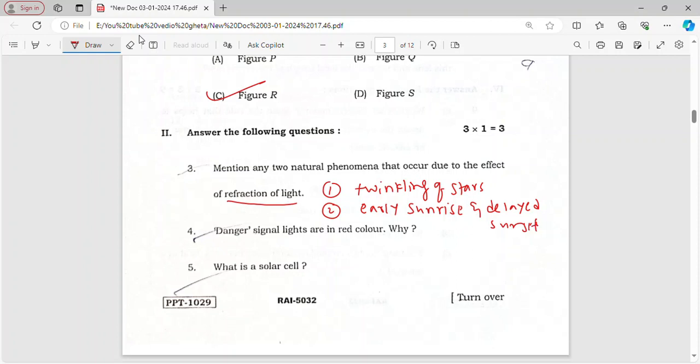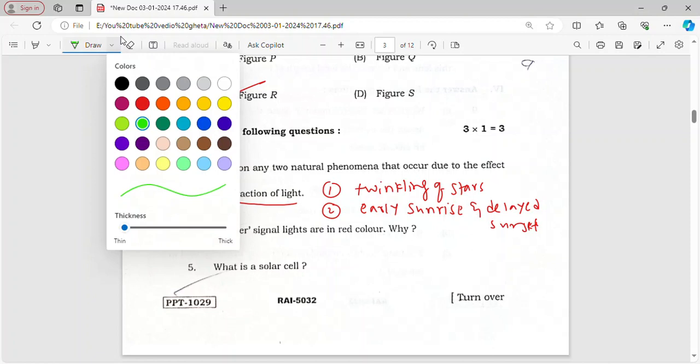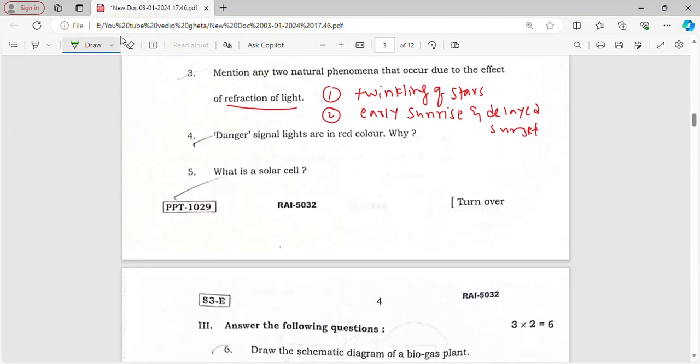Danger signal lights are in red color. Why are danger signals red? Because red color scatters least. That is the reason we are using red color for danger signals.